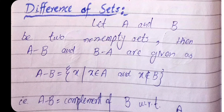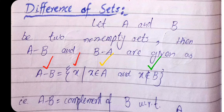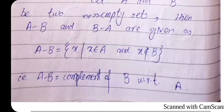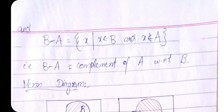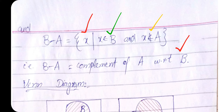Difference of sets: let A and B be two non-empty sets. Then A minus B is the set of all elements x such that x belongs to A but x does not belong to B — we subtract the elements of B from A. This is also called the complement of B with respect to A. Similarly, B minus A consists of all elements x such that x does not belong to A but x belongs to B — the complement of A with respect to B.